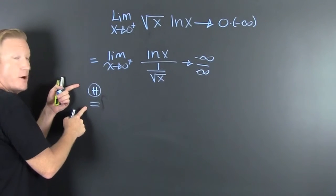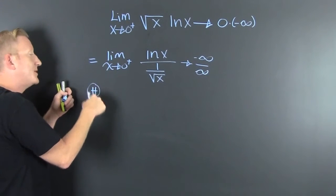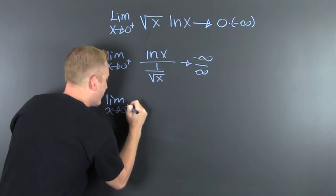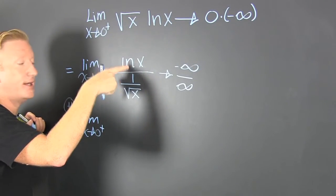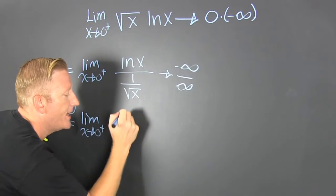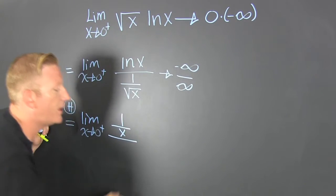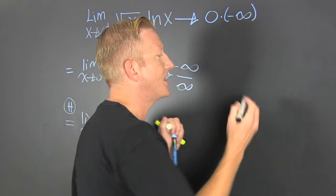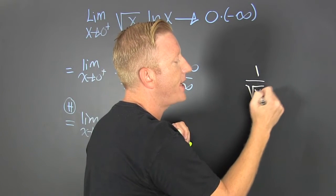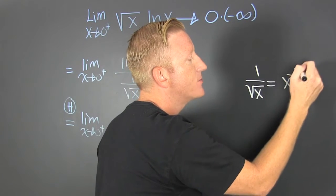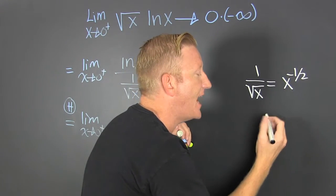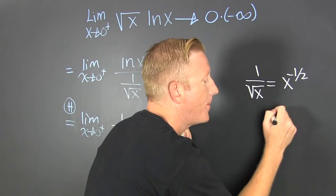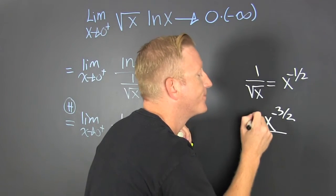So then we use L'Hôpital's rule, indicated with the h with the circle around it. That says the limit as x approaches zero from the right is going to be the derivative of the numerator divided by the derivative of the denominator. The numerator gives us one over x. Now let's look at the derivative of one over the square root of x, which is the same as x to the minus one half. We take the derivative of that, subtract one from the exponent, and get x to the minus three halves.